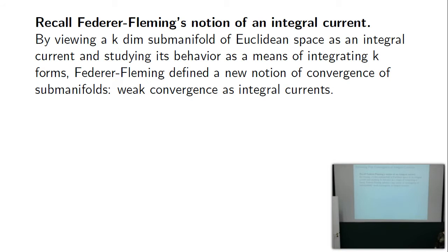Federer-Fleming defined an integral current. In Euclidean space, you have a k-dimensional submanifold in a high-dimensional Euclidean space, and the key property preserved under convergence is how it integrates k-forms. A current is a map from k-forms to the reals: you have weak convergence if integrating a k-form over a sequence of submanifolds M_j converges to some functional on forms — not a submanifold anymore, but some functional.